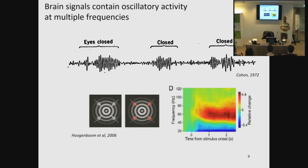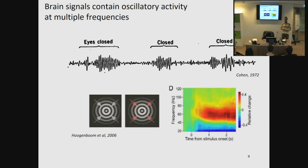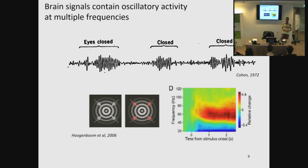An example experiment done by Hogen-Bohm and colleagues here at the Donders Institute presented subjects with concentric rings moving to the center of the screen in an MEG scanner. While no interesting oscillatory activity was clear from the raw data when looked at with the naked eye, if you represent the amplitude of the activity as a function of time and frequency, they found a very robust increase in high-frequency oscillations and a decrease in low-frequency oscillations. The goal of this lecture is for you to understand spectral analysis and be able to interpret figures like this.